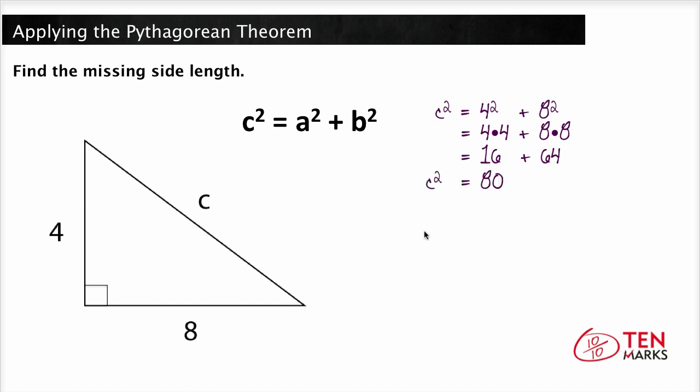Now we need to take the square root of both sides and we get that c equals the square root of 80. Now, simplify the square root. You can do this by decomposing 80 into factors that include perfect squares. And perfect squares are just numbers where the square root is an integer.